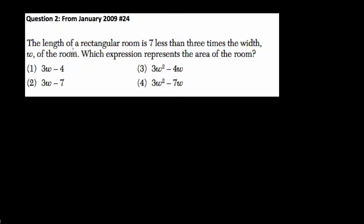So Tim, do you want to read the question for us? Sure. The length of a rectangular room is 7 less than 3 times the width, which is W, of the room. Which expression represents the area of the room?